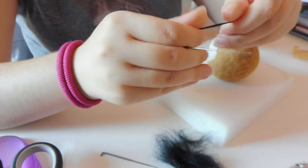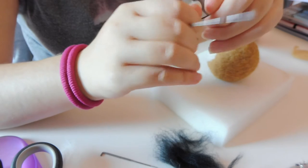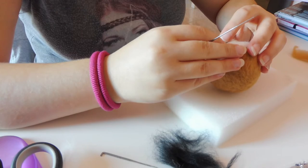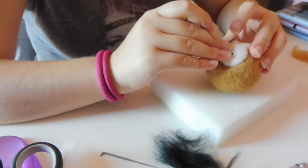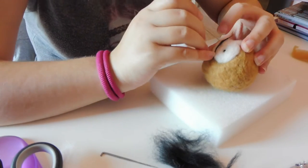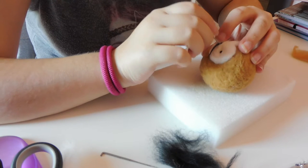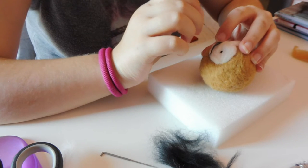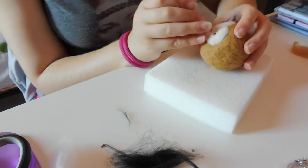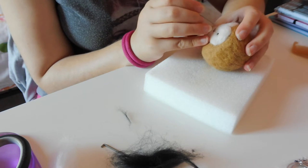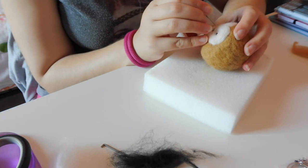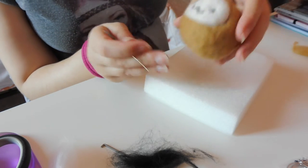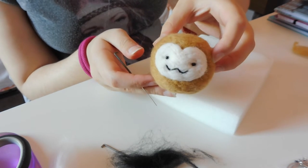Then we're going to take a wisp of black wool and we're going to roll it very carefully between our fingers to make the little mouth. We'll pin it in the center to keep it in place and then just continue poking to form the mouth. This needs a little bit of patience as it's quite a small delicate detail. And there you have it, the little smile.